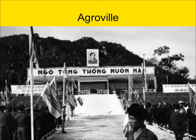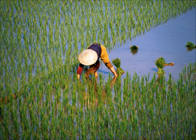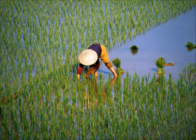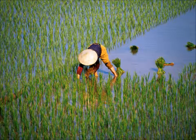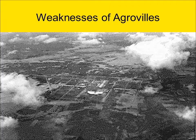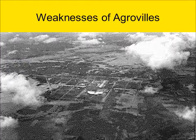Diem and his advisors initially planned to build 80 of these agrovilles. Peasants were required to enter and exit the agraville through guarded checkpoints, and agraville residents would be expected to return each night after working in the rice fields. The agraville system proved to be a failure, and only 23 of the 80 were built before Diem abandoned the program.